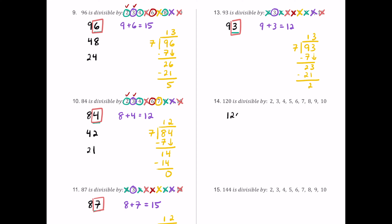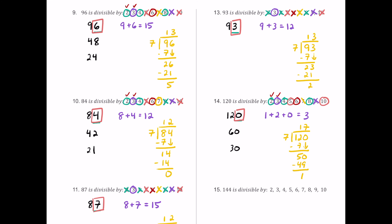For number 14, we have 120. The last digit is 0, so 2 works. Half is 60 — still even — so 4 works. Half of 60 is 30 — still even — so 8 works. The digit sum 1 plus 2 plus 0 is 3, a multiple of 3 but not 9. The last digit is 0, so 5 and 10 both work. Since 2 and 3 work, 6 also works. For 7: dividing 120 by 7 leaves a remainder, so 7 fails.